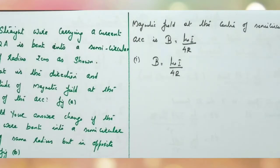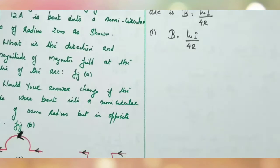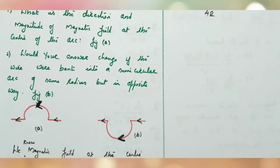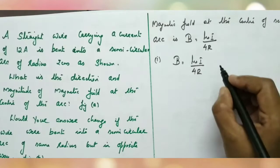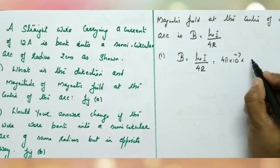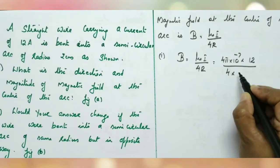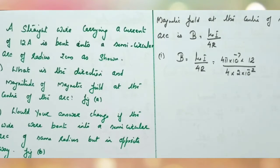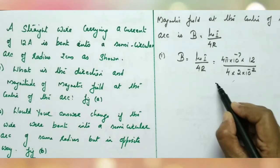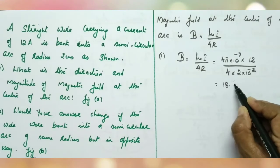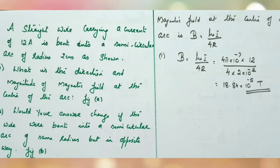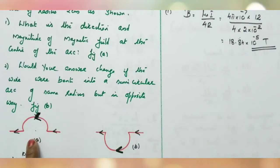We can calculate the magnitude of the magnetic field at the center of the arc in the first case, figure A. Current is 12 Ampere, radius is equal to 2 centimeter. Substituting: B equals mu-0 I divided by 4R, that is 4π × 10⁻⁷ × 12 divided by 4 × 2 × 10⁻². After cancelling, the answer is 18.84 × 10⁻⁵ Tesla.